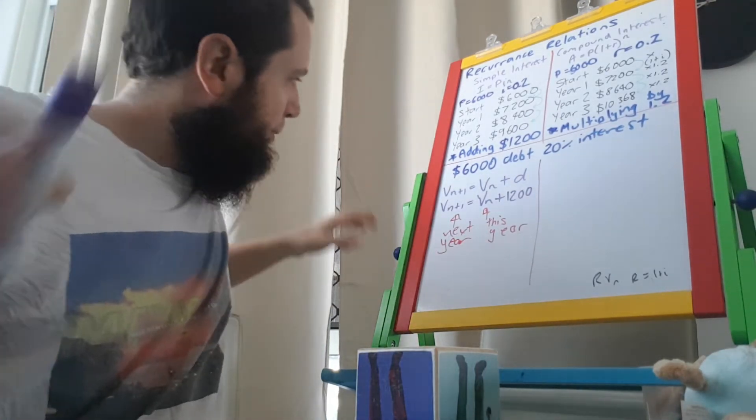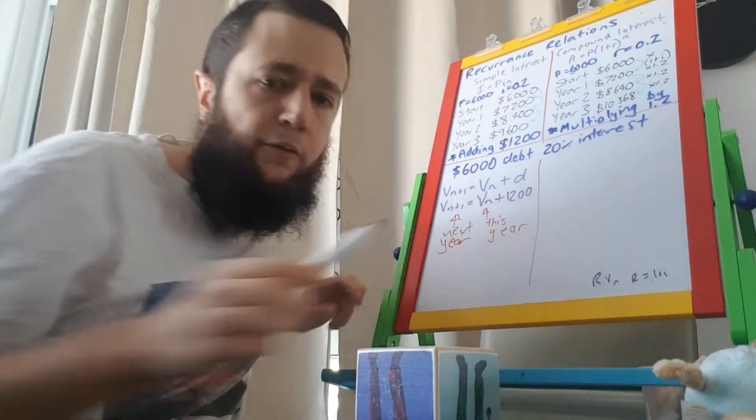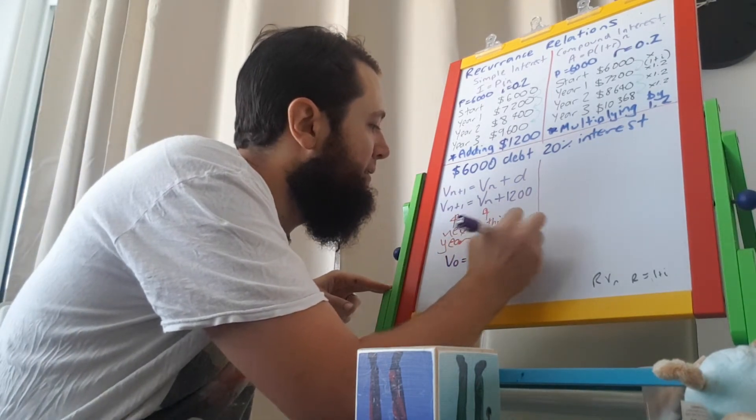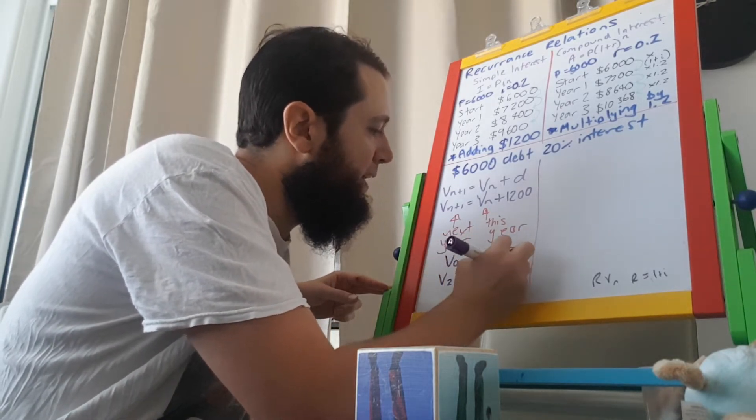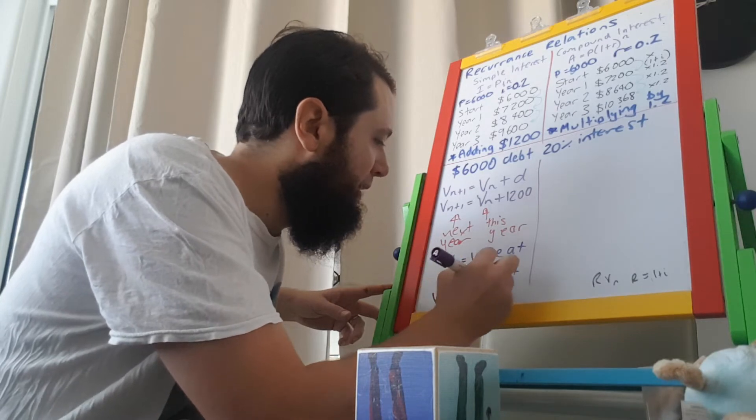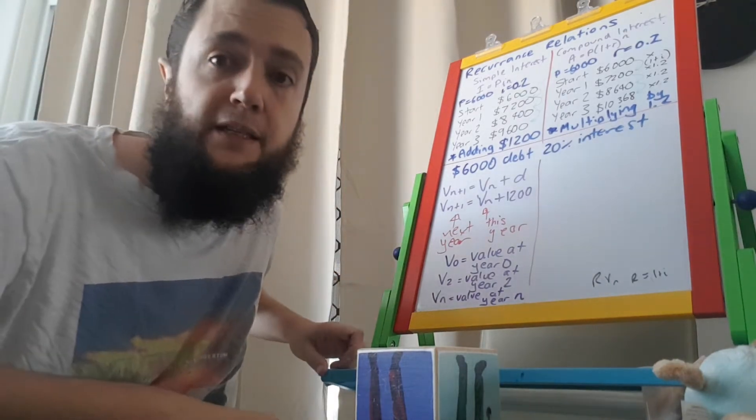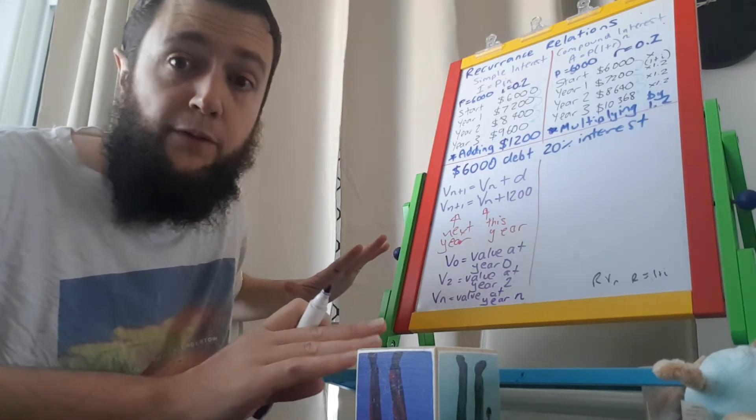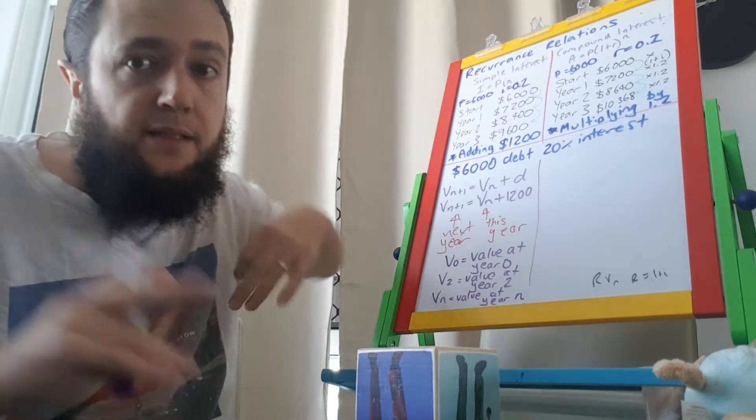And N there, N simply means the year. So, you know, you could say that's year zero. If you saw V0 anywhere, V0 means the value at year zero. V2 would be the value at year two. And in turn, VN is the value at year N. All right. We're just saying it's the value for any year. But that's the whole idea. That's all the recurrence relationship shows with simple interest. The value this year is the value last year plus a certain amount. In this case, it's $1,200.